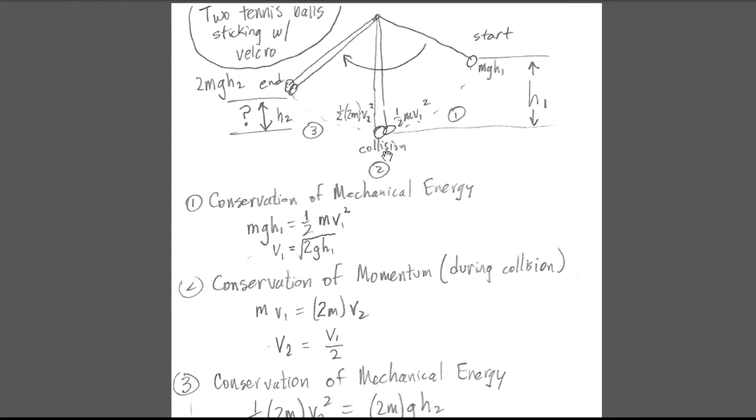Then in part two of my solution, during the collision, momentum is conserved. So prior to the collision, the momentum is entirely with Robin Hood, so MV1, Robin Hood's mass times his velocity. And that is the same as the momentum after the collision, where the mass is 2M now, Robin Hood plus Fiona, and their new velocity, V2, the velocity right after the collision.